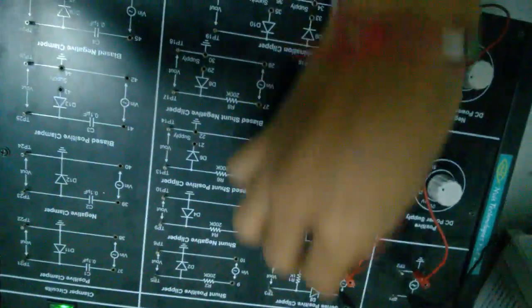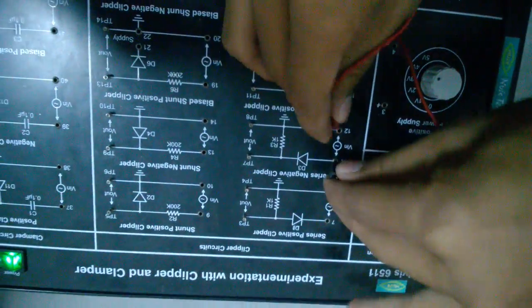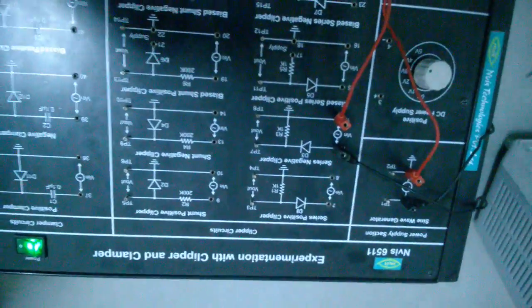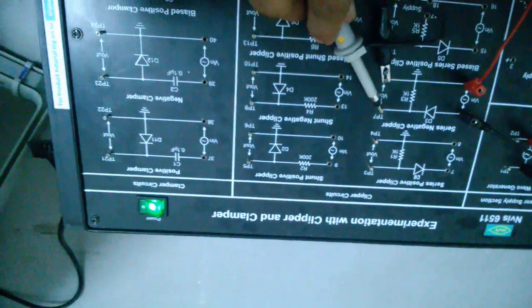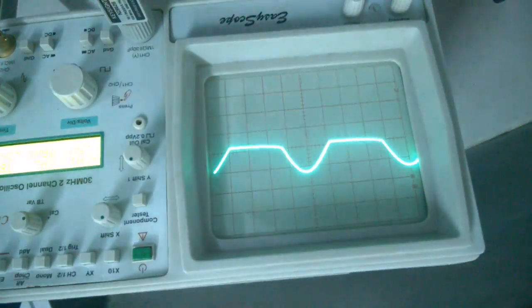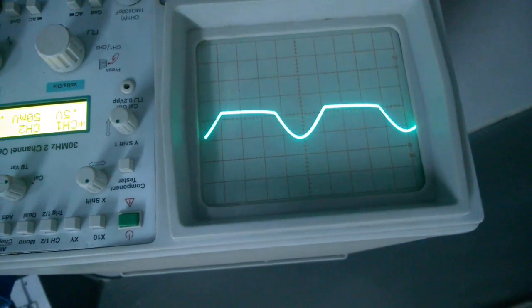Now, here I am using the negative clipper. So when I use the negative clipper, it cuts the negative part of the input sinusoidal wave. You can see it in our CRO. It cuts the negative part and only gives the output in the positive part.